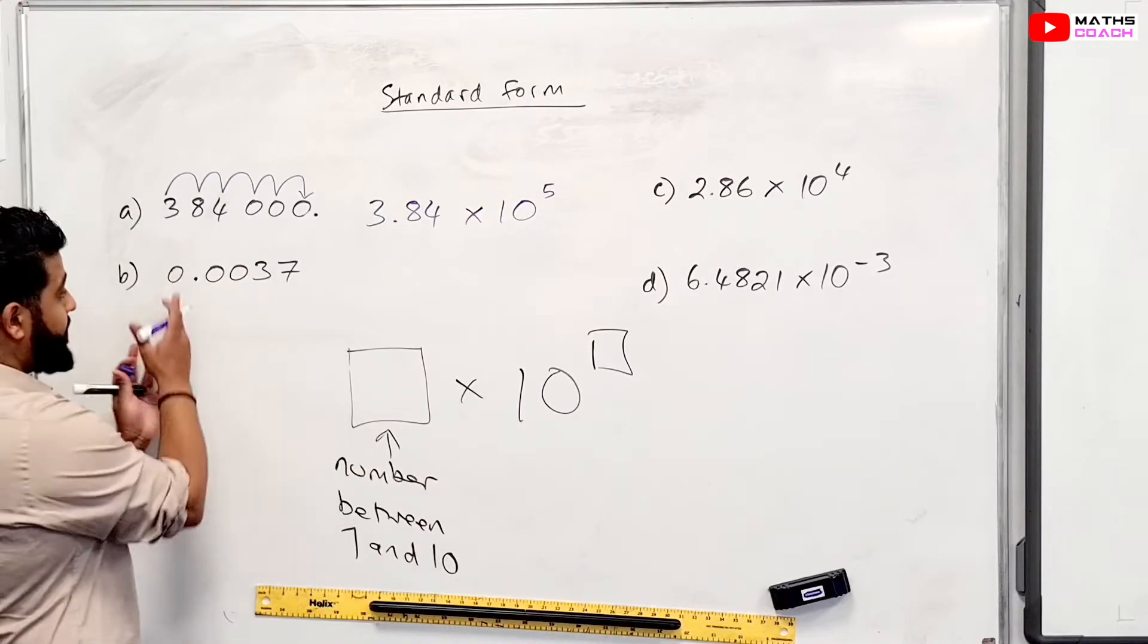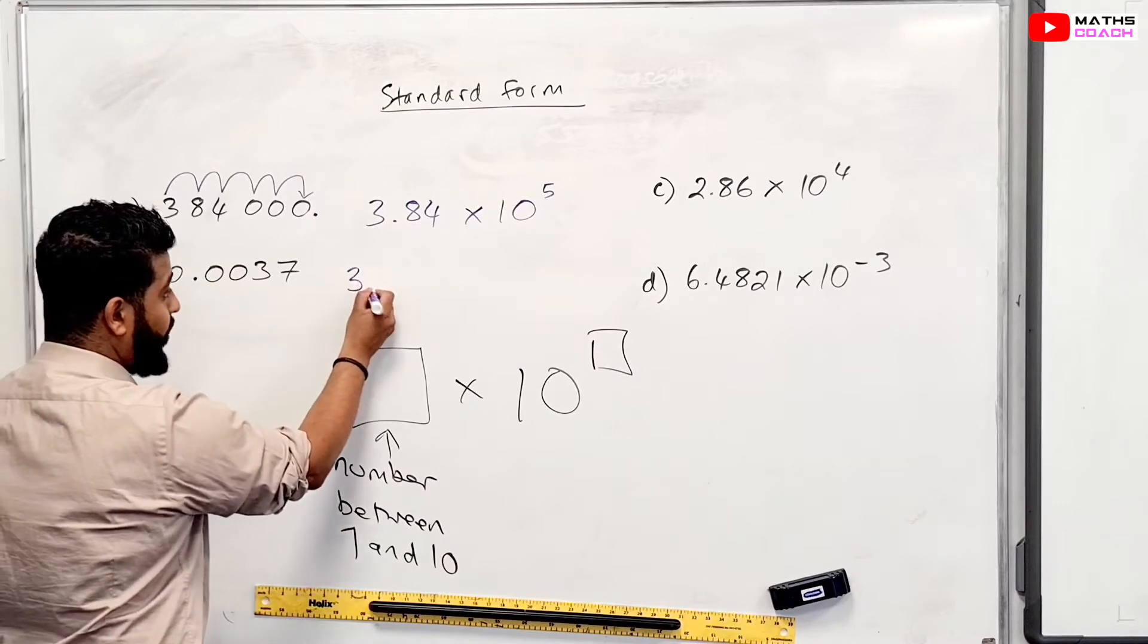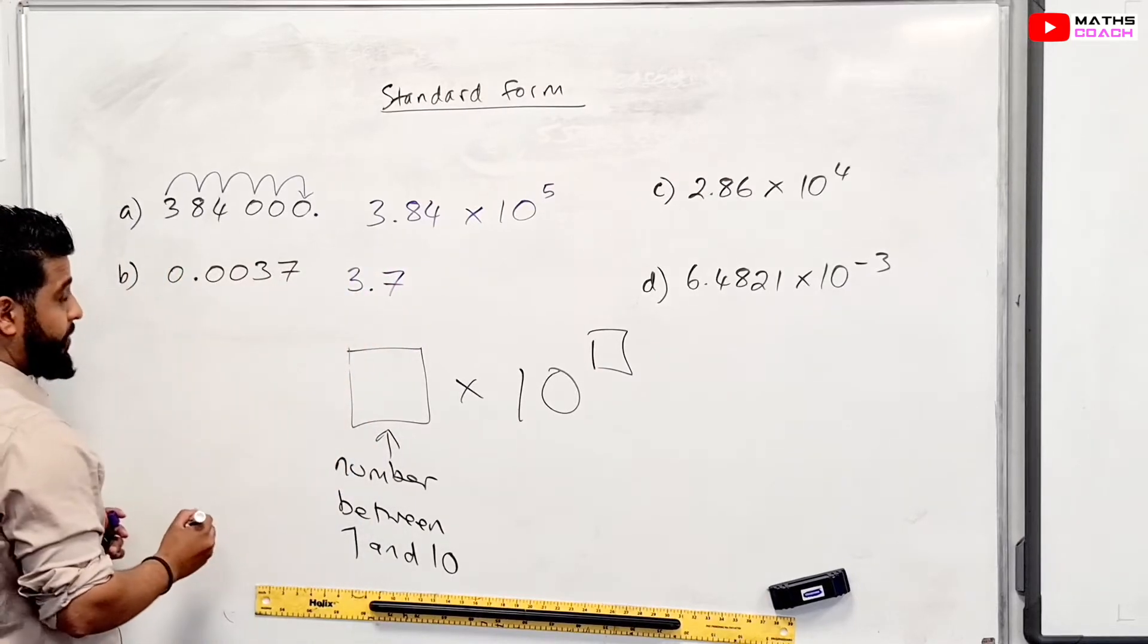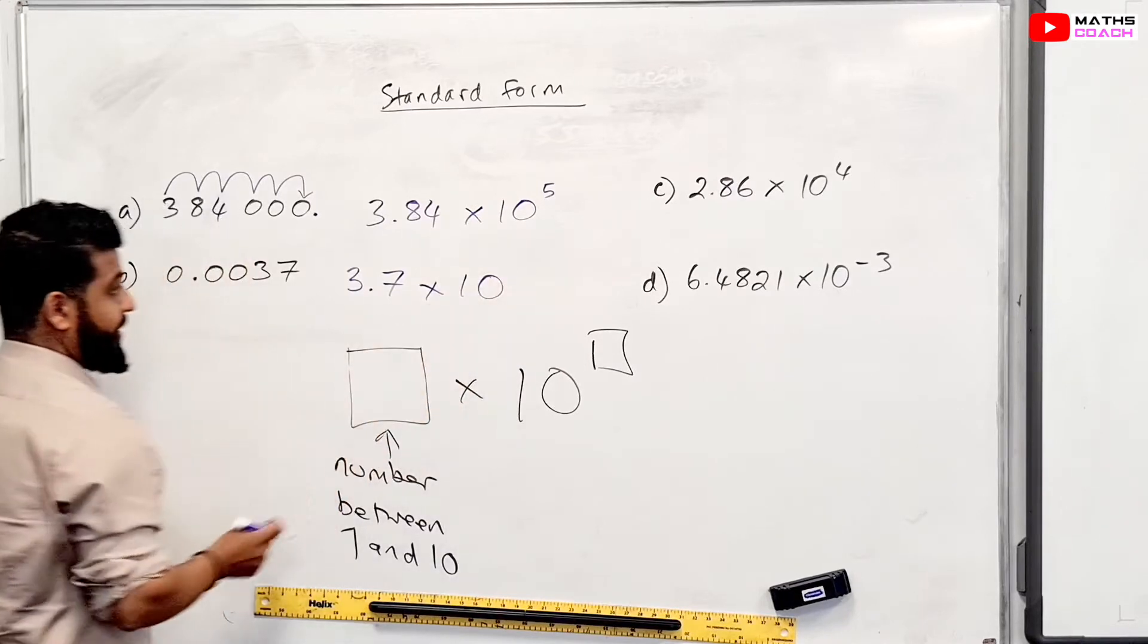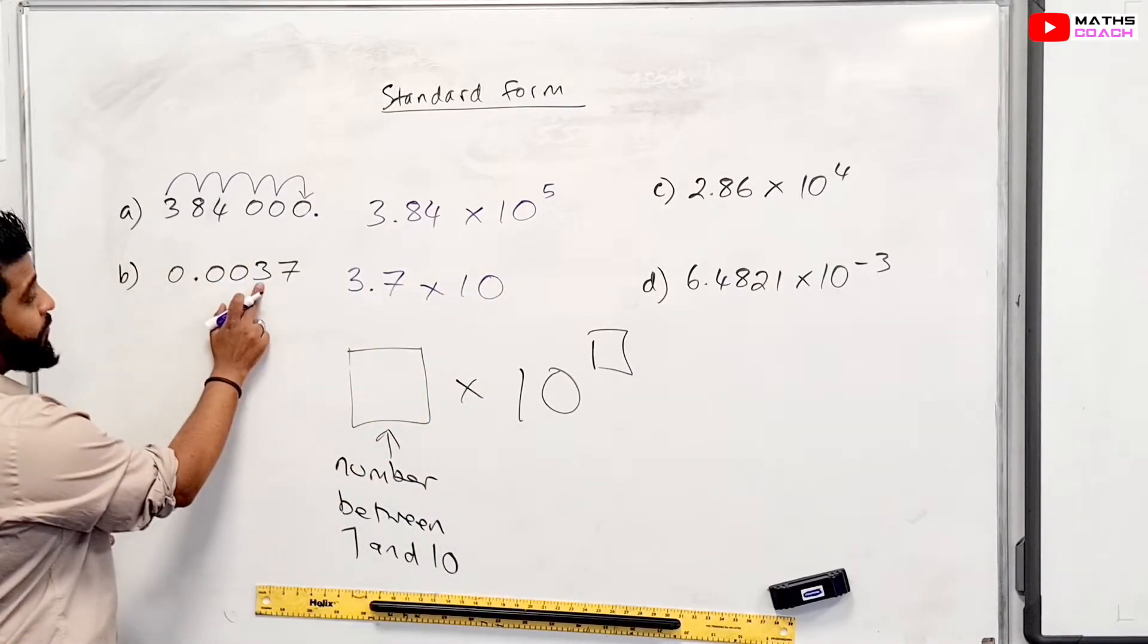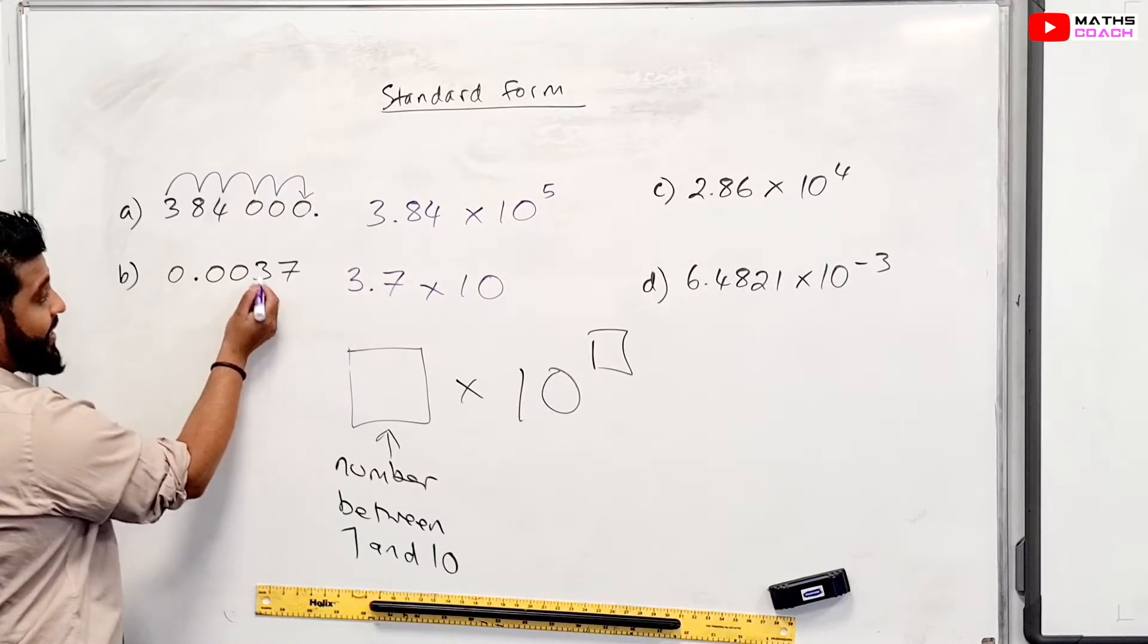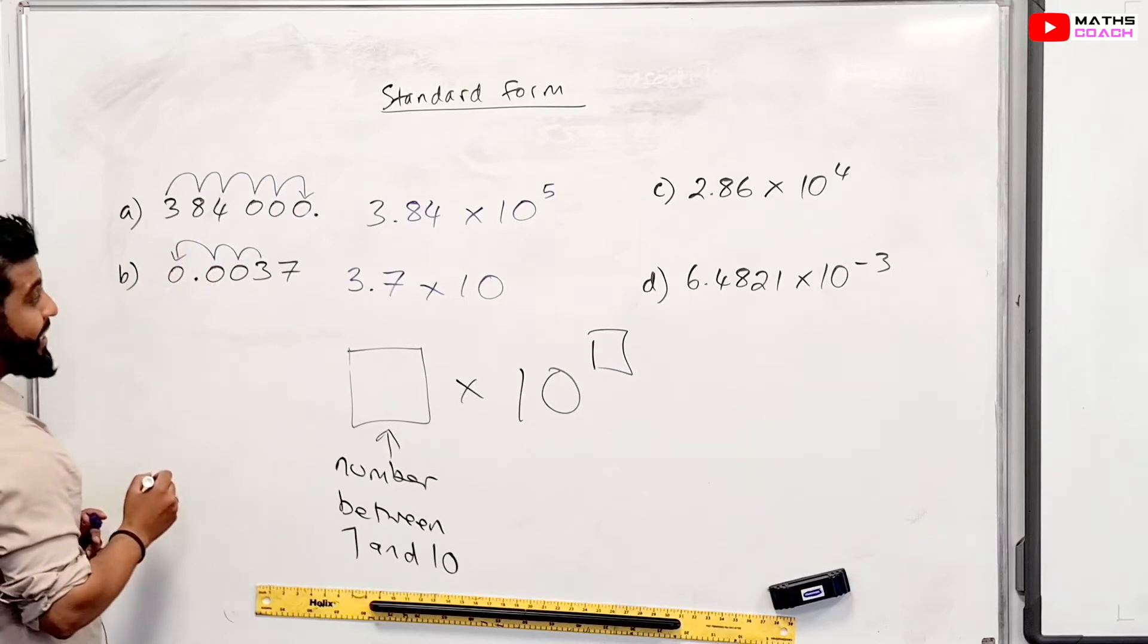So now we move on to this number, 0.0037. So we want to have 3.something, and in this case, the something is our 7 right there, times 10 to the power of a value, the index number. So this time, the 3 has ended up on this side of the decimal place. So how does it end up there? Well, 1, 2, 3. It will take 3 steps to get there.